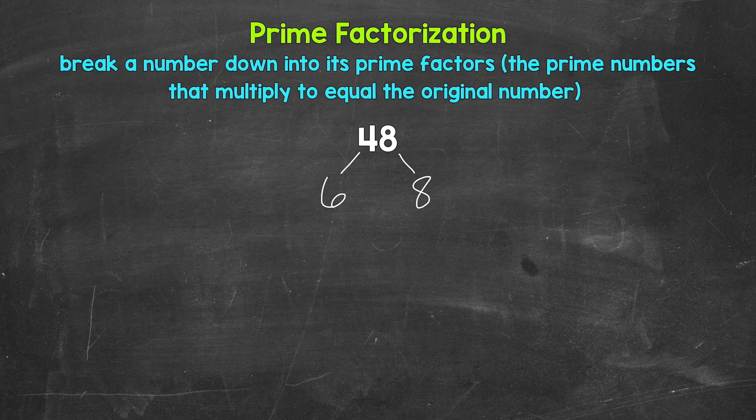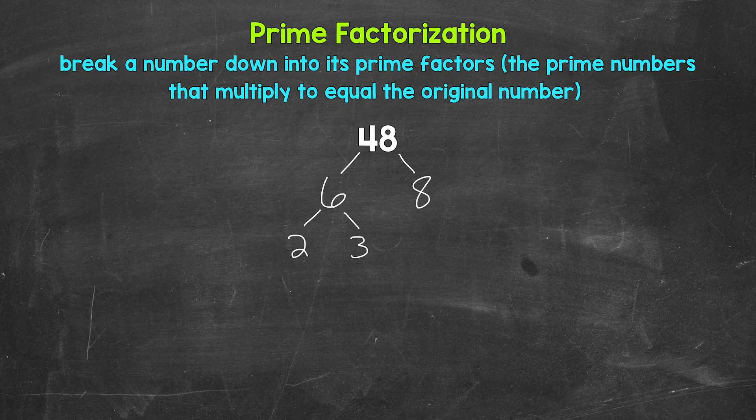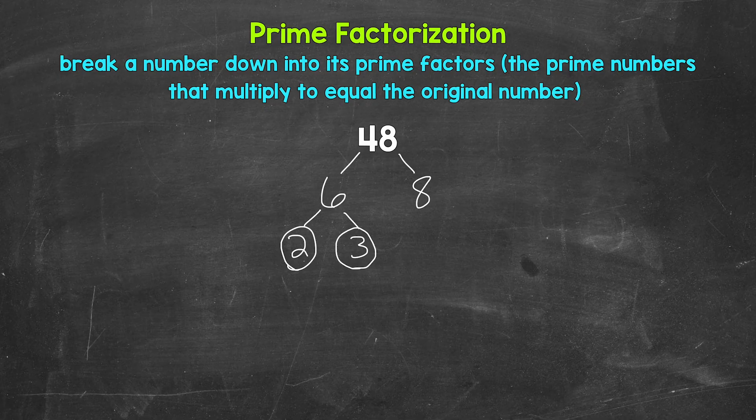Now let's continue breaking this down. So we have 6 and 8. Both are composite numbers, so they both can be broken down further. Let's start with 6. Let's think of two factors here. Well, 2 and 3 are factors of 6. 2 times 3 equals 6. So let's break 6 down into 2 and 3. Now 2 and 3 are both prime numbers. We can't break those down any further. So let's circle those to show that we have prime numbers.